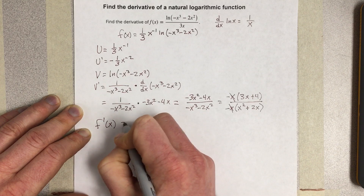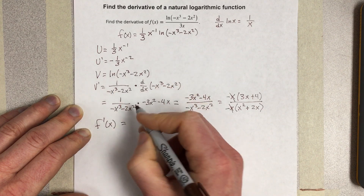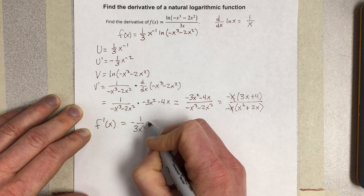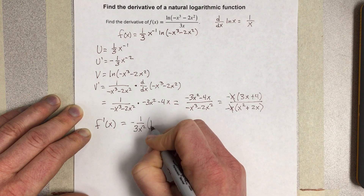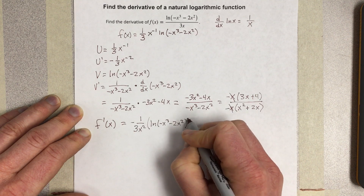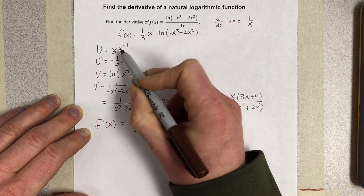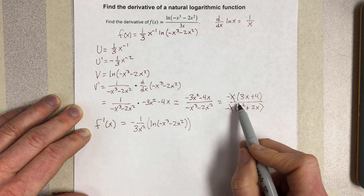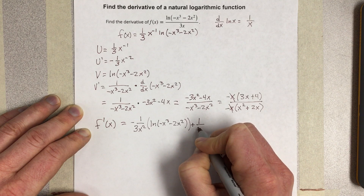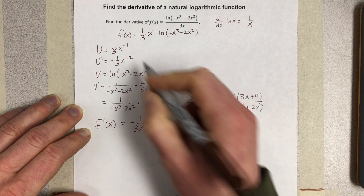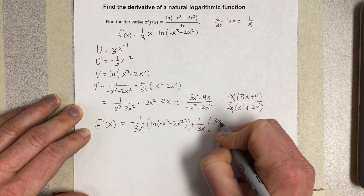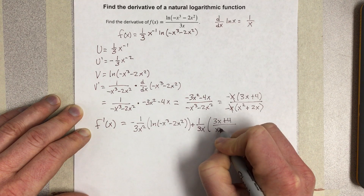So applying the product rule, f prime of x equals u prime times v, which is negative 1 over 3x squared times the natural log of (-x³ - 2x²), plus u times v prime, which is 1 over 3x times (3x + 4) over (x² + 2x).